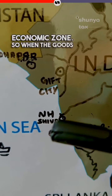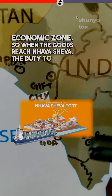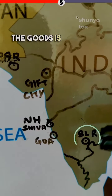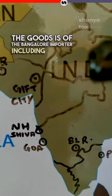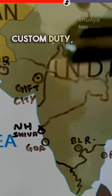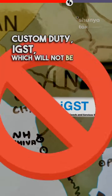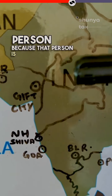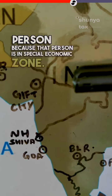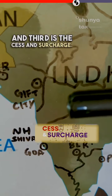So when the goods reach Nhava Sheva, the duty to clear the goods is of the Bangalore importer, including all the taxes: Basic Custom Duty, IGST — which will not be applicable to this person because that person is in a Special Economic Zone — and third is the cess and surcharge.